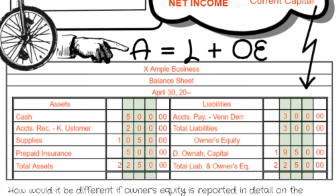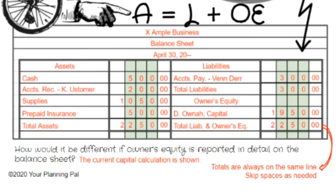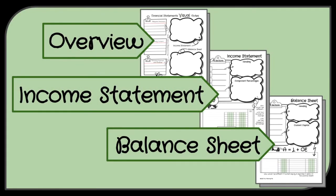We're looking to confirm that total assets equal total liabilities and owner's equity — and they do. If owner's equity is reported in detail on the balance sheet, the current capital calculation is shown directly on the balance sheet itself. Don't forget that totals are always on the same line, so skip spaces as needed. You can go back and add color, details, or extra notes in the margins. Thanks for watching.